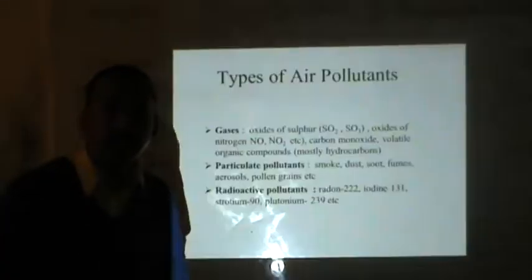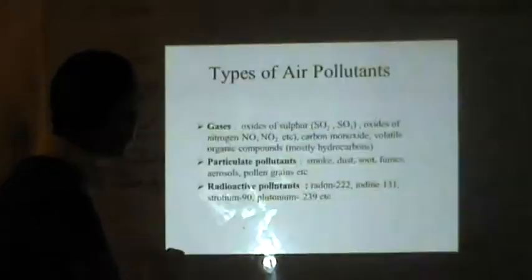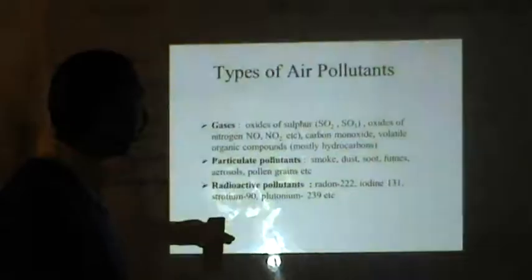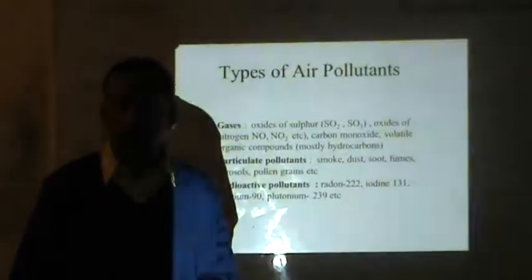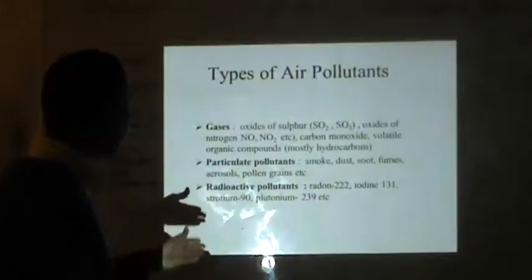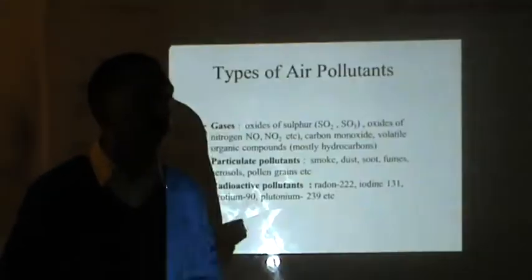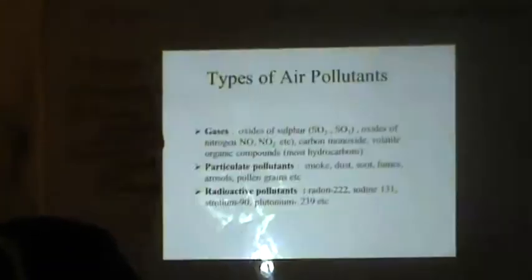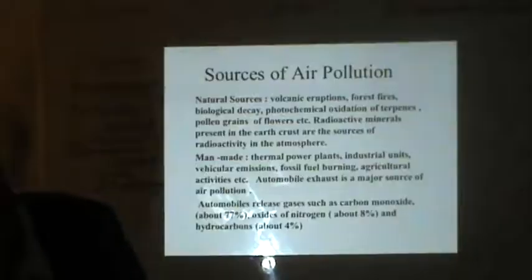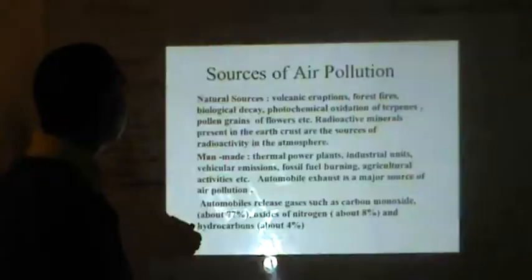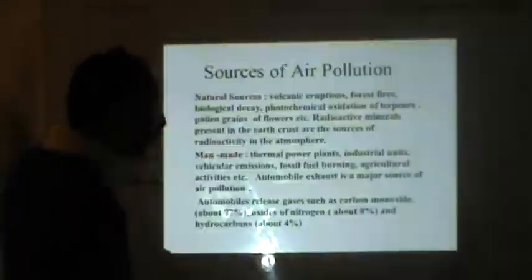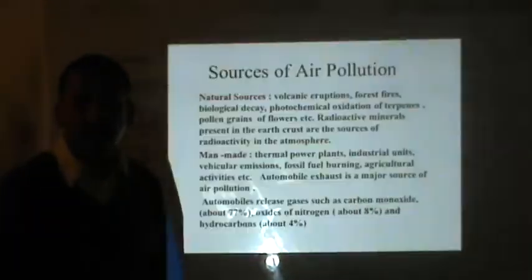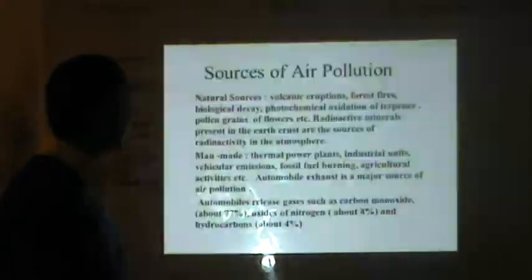We also have radioactive pollutants, which are one of the dangerous sources. These include radon-222, iodine-131, strontium-90, and plutonium-239. Natural sources of pollution include volcanic eruption, forest fires, photochemical oxidation of terpenes, pollen grains of flowers, and radioactive elements present in the earth's crust.